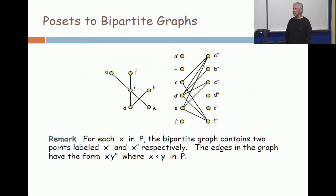The edges in the graph go between a prime element and a double prime element, but you put an edge x prime y double prime when x is less than y in the poset.